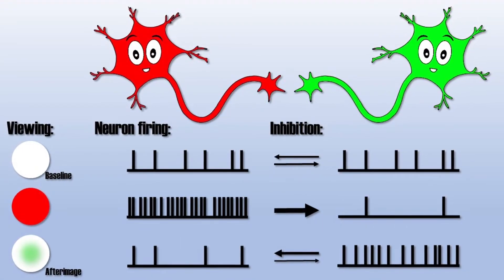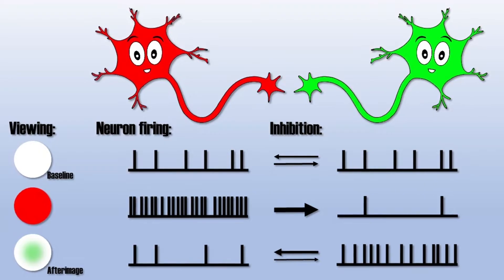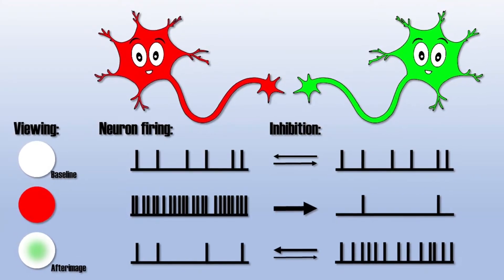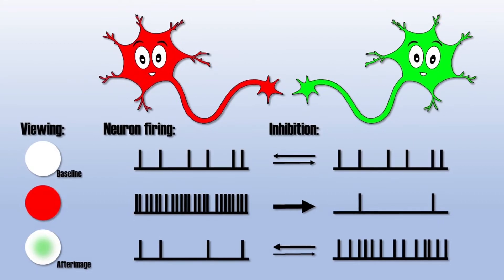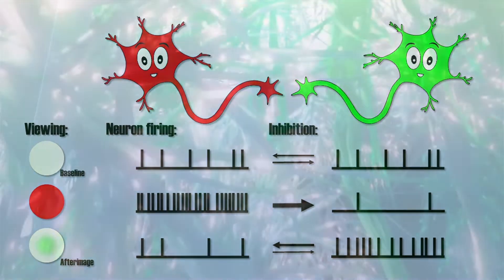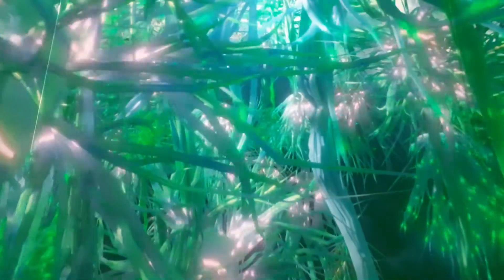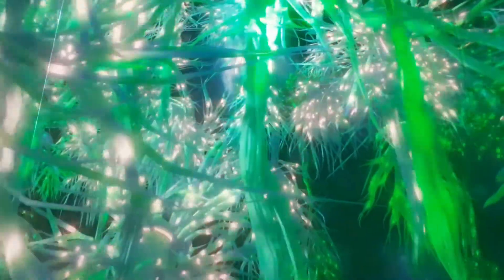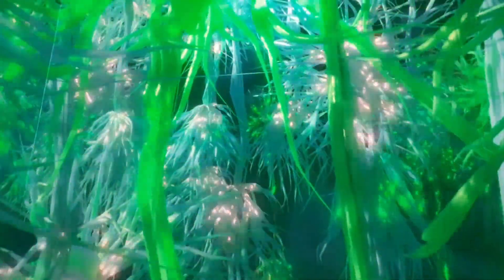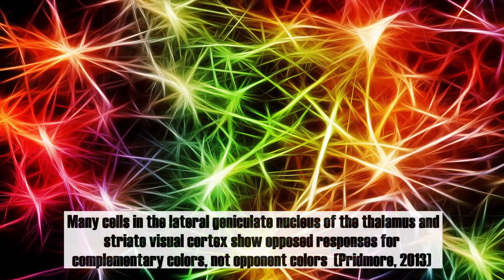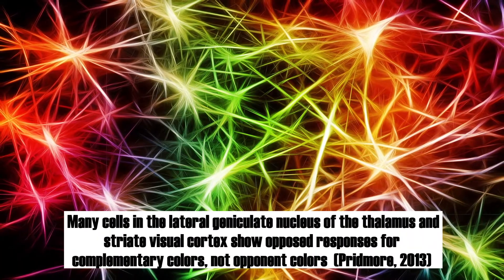Having such an excitatory-inhibitory relationship in neurons that encode opposing colors makes it easier to distinguish between different colors and borders. It should however be noted that this theory is not complete, since research has shown that excitatory-inhibitory relationships in the visual cortex also exist between neurons processing complementary colors, such as green and magenta.